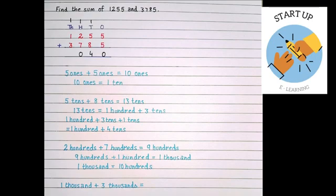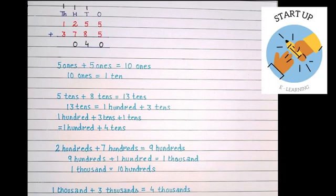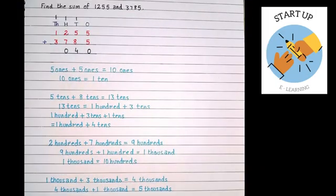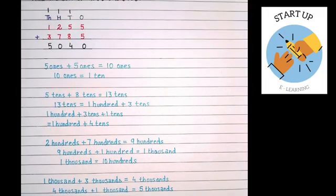Now we are going to add the thousands place, that is 1 thousand plus 3 thousands. 1 thousand plus 3 thousands is equal to 4 thousands. In this 4 thousands we will add that 1 which we have carried over on thousands. So 4 thousands plus 1 thousand is equal to 5 thousands. This 5 thousands will be written under thousands place under 3. When we have added 1255 and 3785, we got the sum 5040.